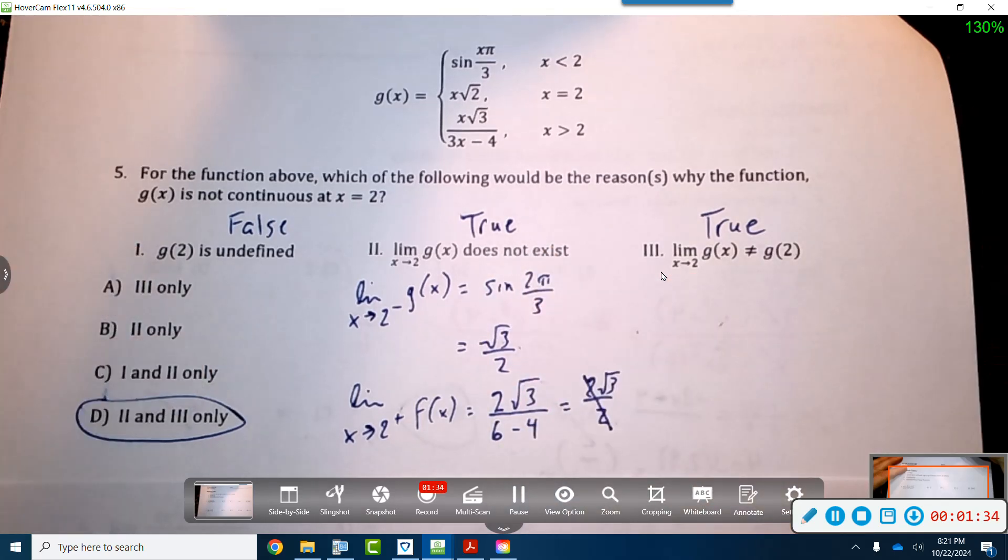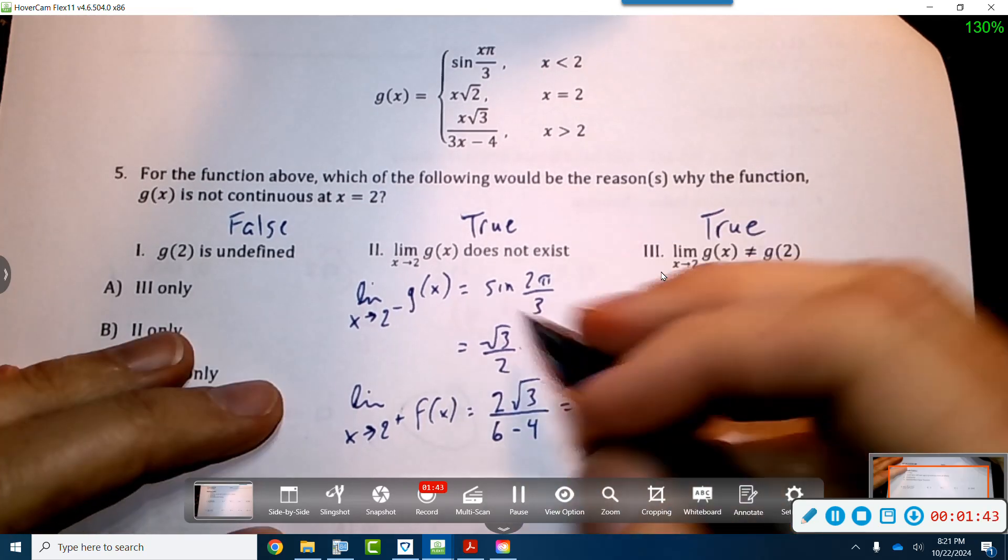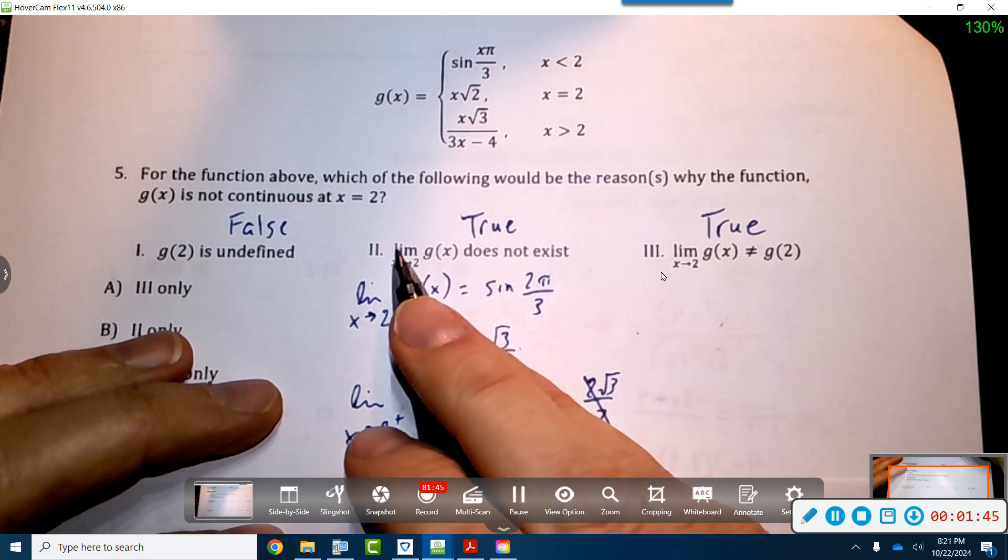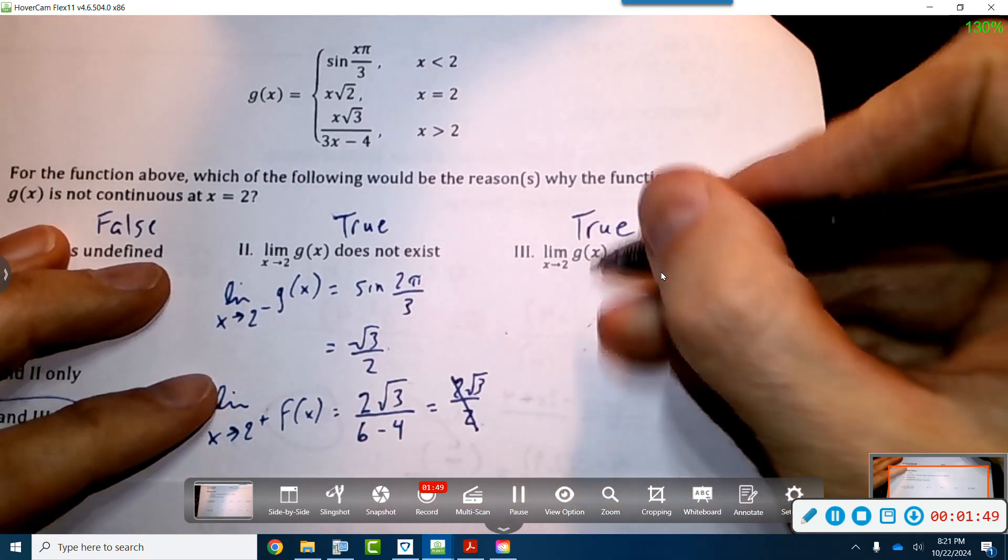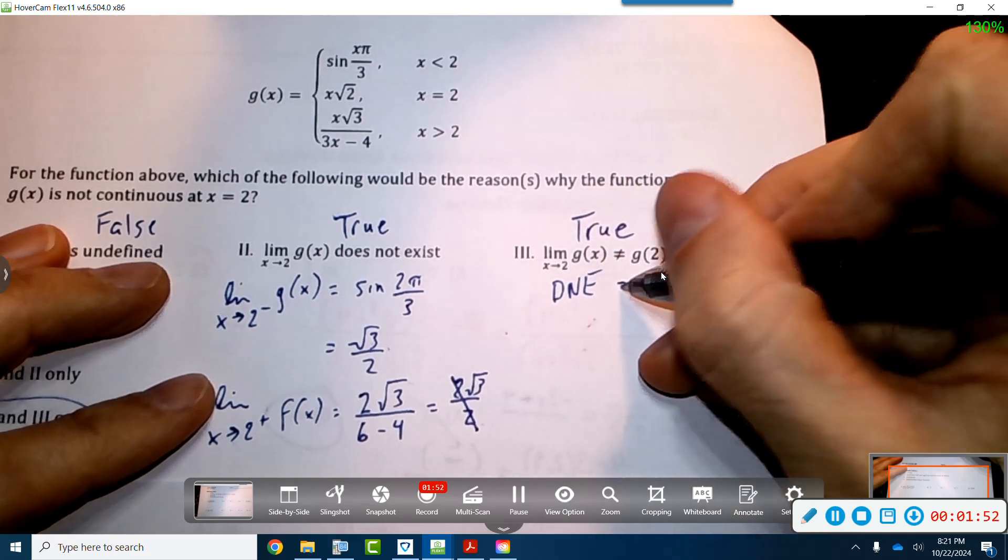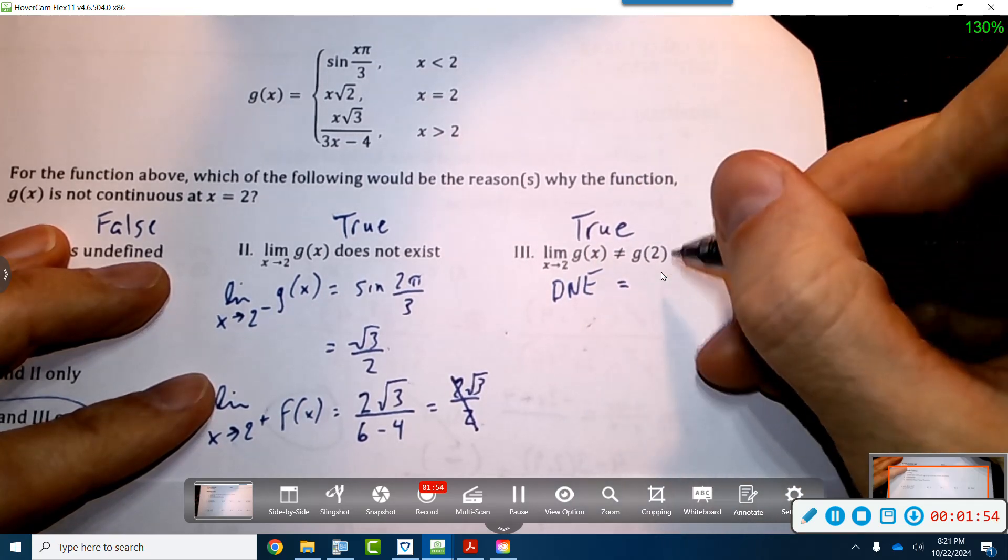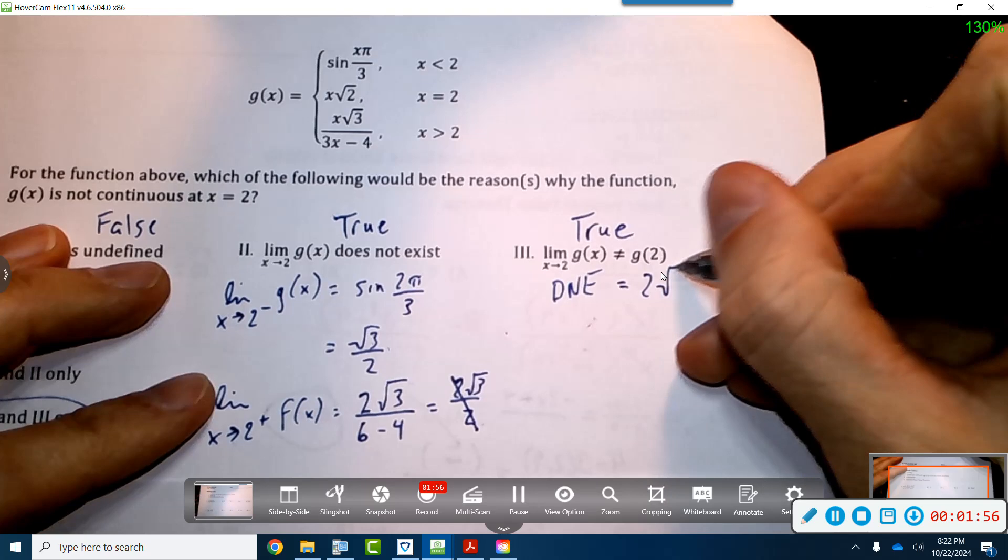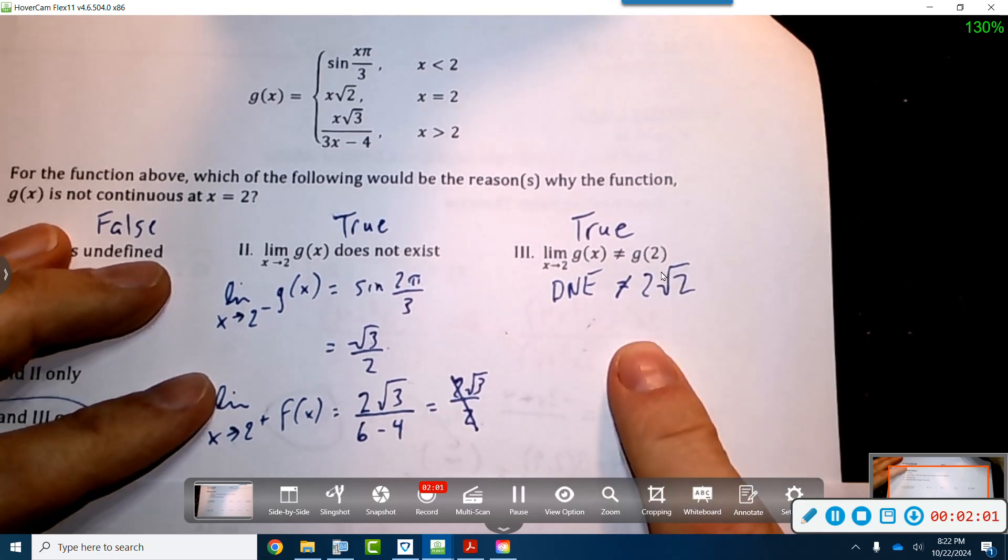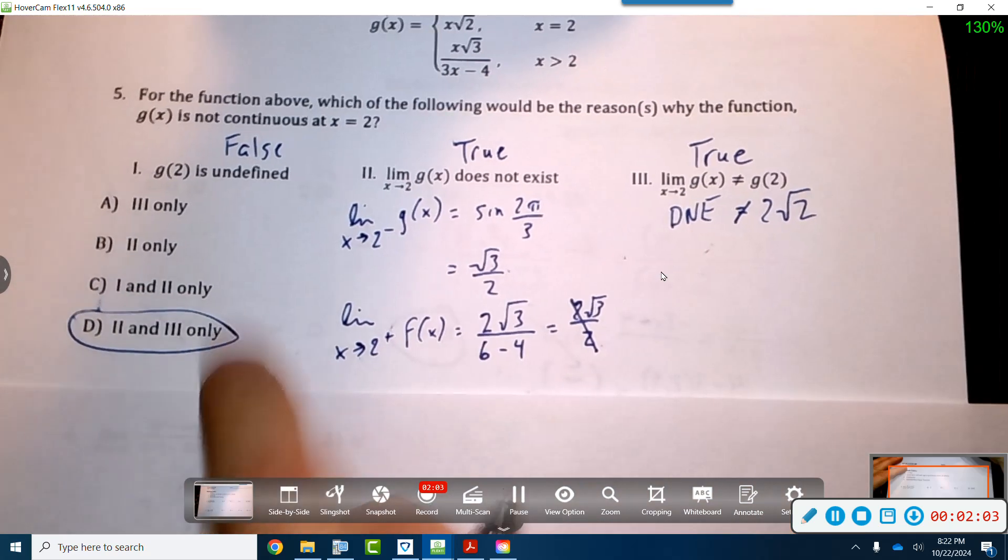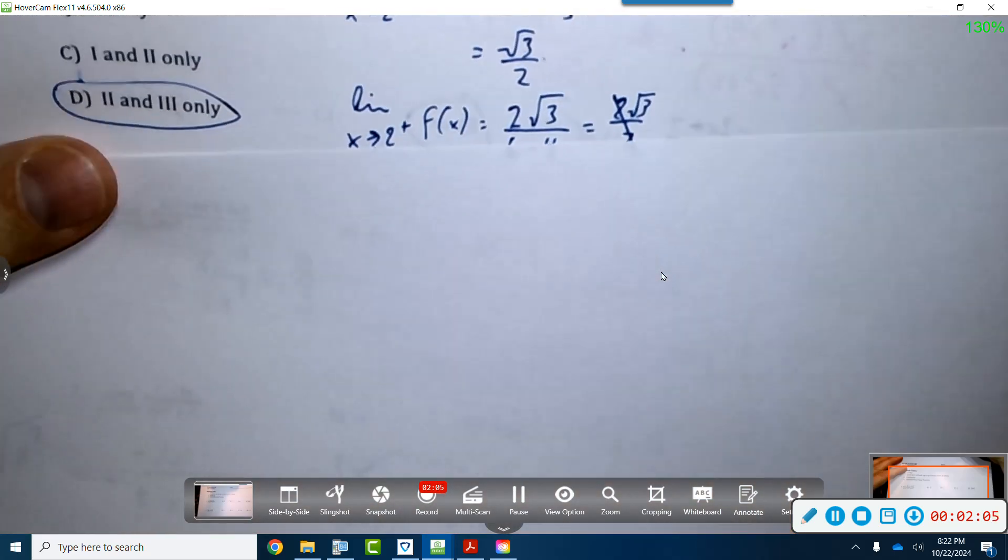So this is actually true. The limit doesn't exist because coming from the left and coming from the right, they don't actually equal, so this is true. The limit does not exist. Now right here, this is also true because the limit does not exist, and this guy actually is 2 radical 2. So clearly, these guys do not equal each other. That's true. So this means that only 2 and 3 are true, so D is the answer.